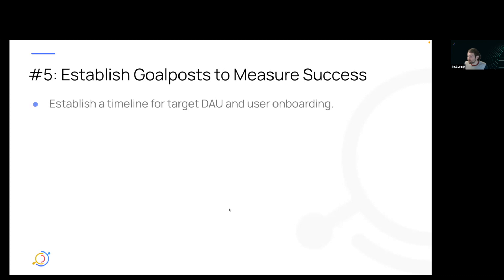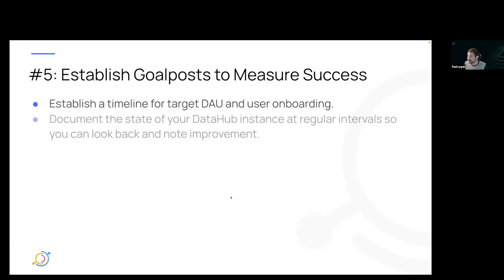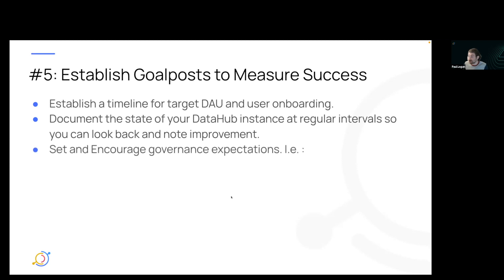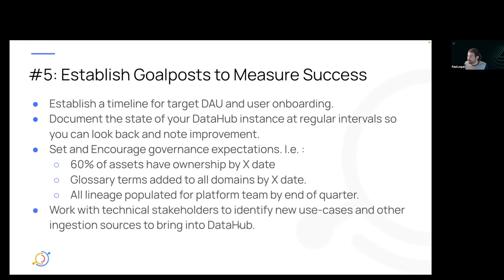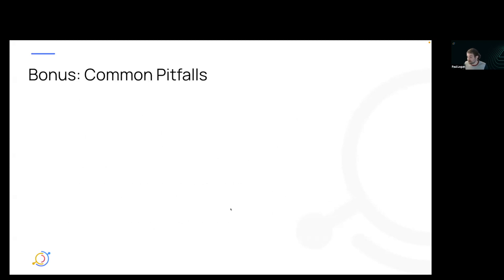Finally, establish some goalposts. Set timelines for daily active users and how many users you've onboarded. Document the state of your instance at regular intervals and take snapshots so you can see how far you've come. Encourage governance expectations like adding ownership to assets, creating glossary terms within domains, or making all lineage populated for certain tools. Work with your stakeholders to identify new use cases — for example, Etsy found a great expectations deployment going on at the same time and integrated it, which really increased their success.